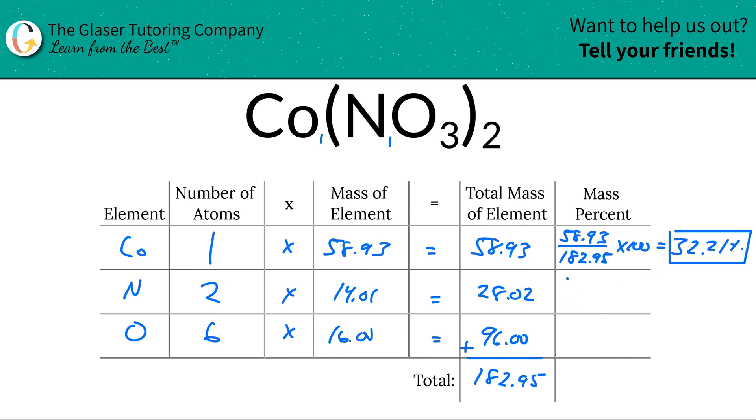We're going to do the same process for nitrogen. Take the total mass of the nitrogen, 28.02, divide that by 182.95, multiply that by 100, and we get a percent here of roughly 15.32%.